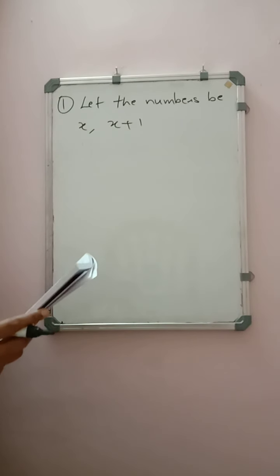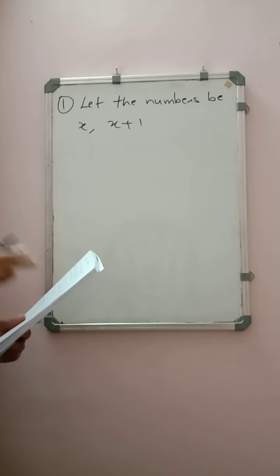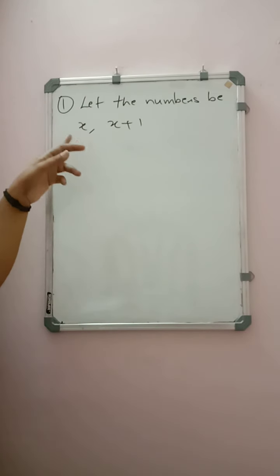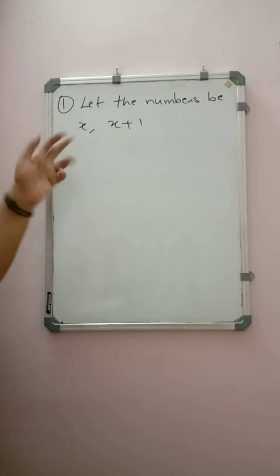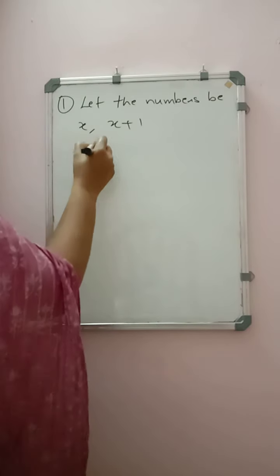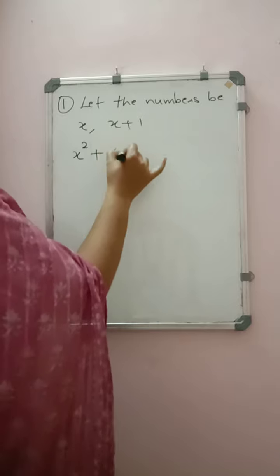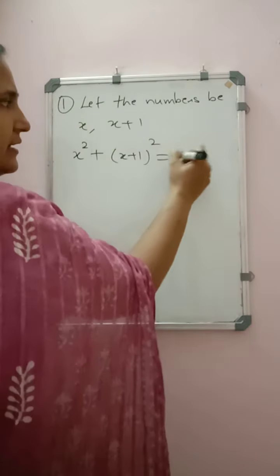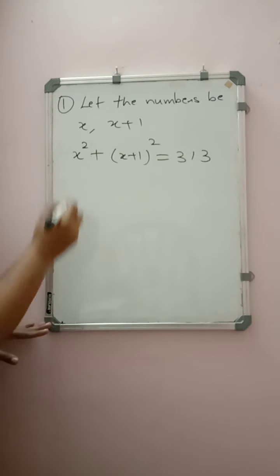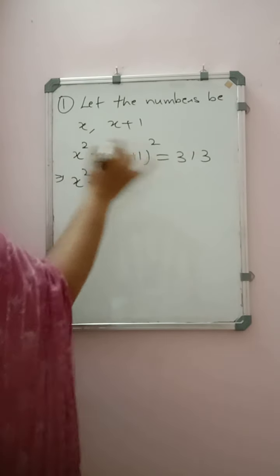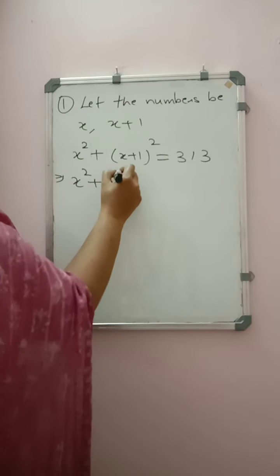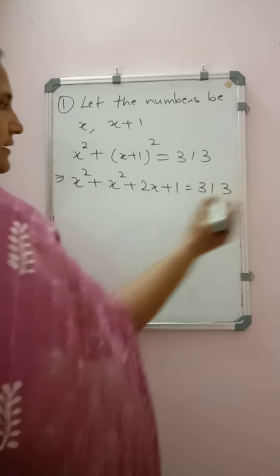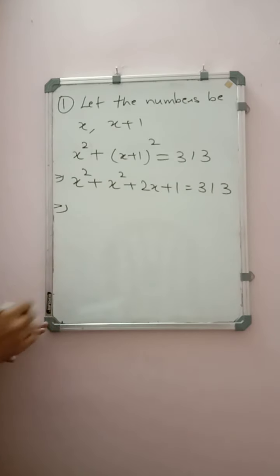It was written: sum of the squares of two consecutive natural numbers. We have to square these two numbers and add them. So it will be equal to x² + (x+1)² = 313. We will simplify using the identity: x² + x² + 2x + 1 = 313. So we are getting a quadratic equation.